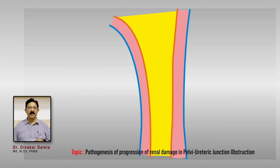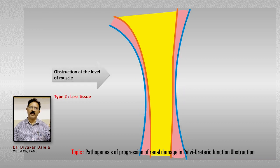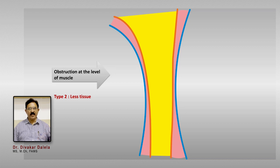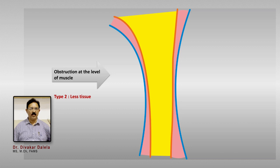In another variant, the muscle cord becomes very thin and very atrophic — so much so that if you put a ureteric catheter through the lumen of the PUJ, you will see the ureteric catheter through the wall of the pelvi-ureter junction. It is very thin and atrophic and because of that it is not able to conduct the peristaltic wave, thus causing PUJ obstruction.